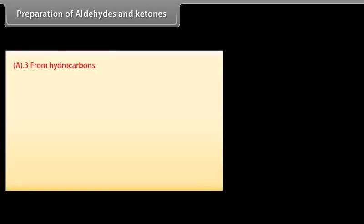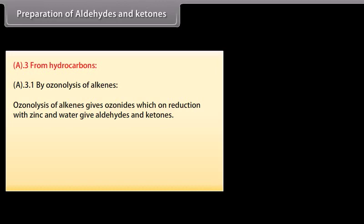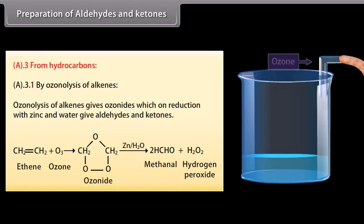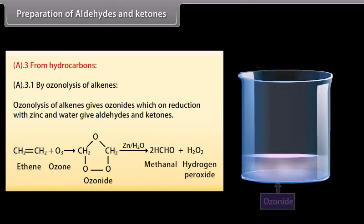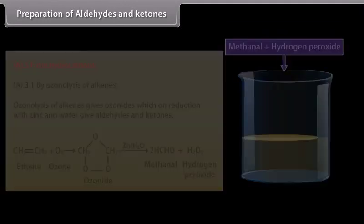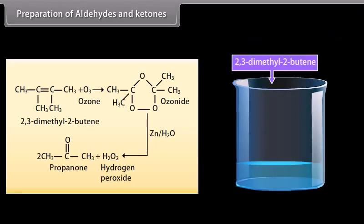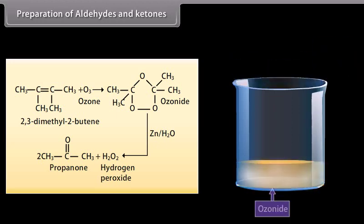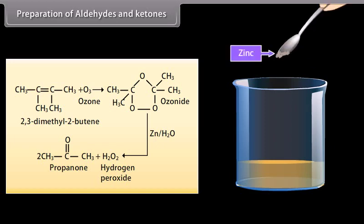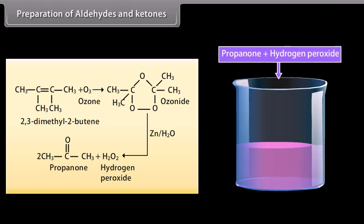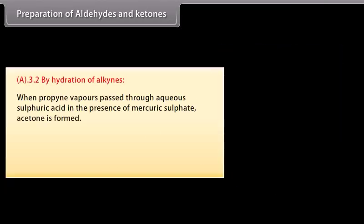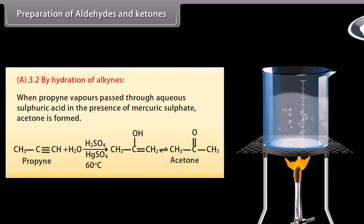From hydrocarbons, by ozonolysis of alkenes: ozonolysis of alkenes gives ozonides, which on reduction with zinc and water give aldehydes and ketones. Ozone gas reacts with ethene and forms an intermediate ozonide, which with zinc and water gives methanal and hydrogen peroxide. Ozone gas reacts with 2,3-dimethyl-2-butene and forms an ozonide intermediate, which with zinc and water gives propanone and hydrogen peroxide. By hydration of alkynes: when acetylene vapors are passed through aqueous sulfuric acid in the presence of mercuric sulfate, acetaldehyde is formed.